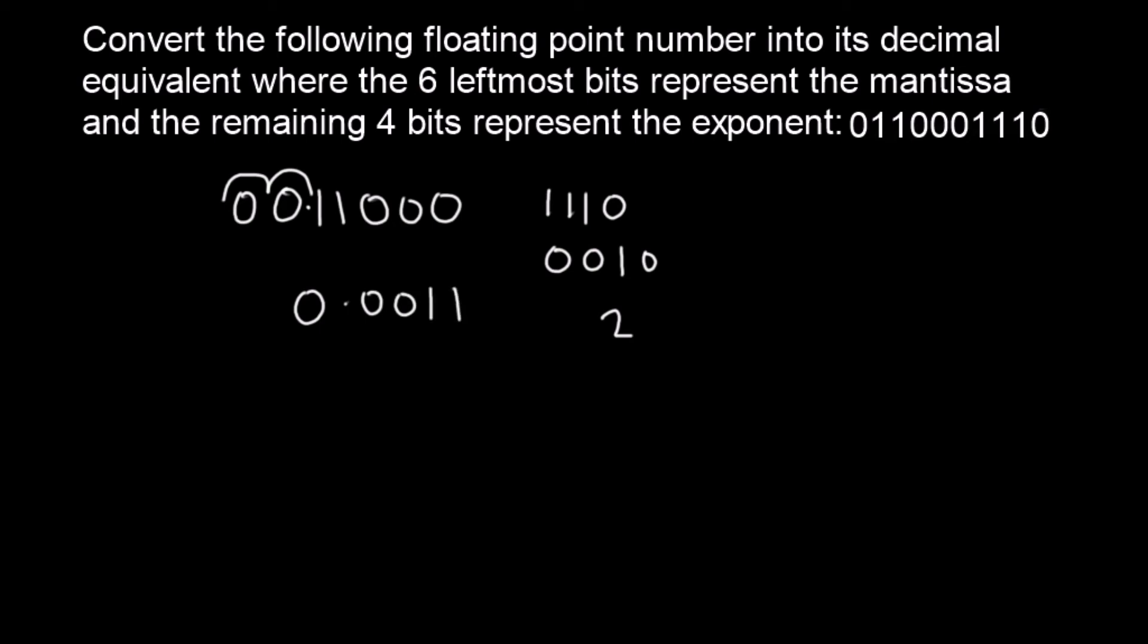And now we need to convert that into its decimal equivalent. So that's going to be, well, if that's a half, that's a quarter, that's an eighth and that's a sixteenth. So what we have here is 1 eighth plus a sixteenth, which gives us 3 sixteenths.